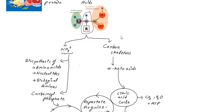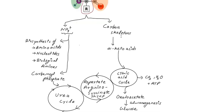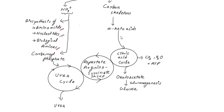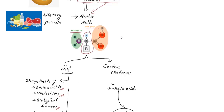The amino group is released as an ammonium ion. For example, when amino acids break down, the ammonium ion is produced. It then enters the urea cycle via carbamoyl phosphate. Carbamoyl phosphate is involved in the urea cycle, and ultimately urea is derived and excreted. That is one way amino acids break down.